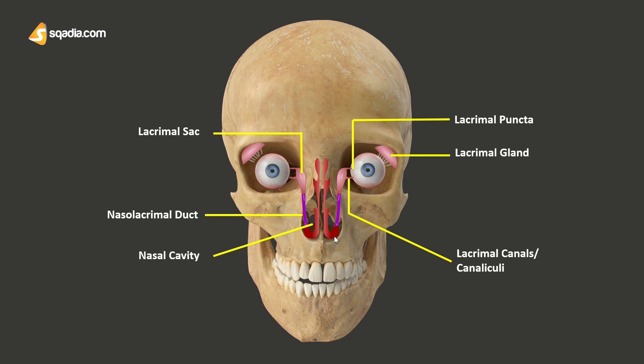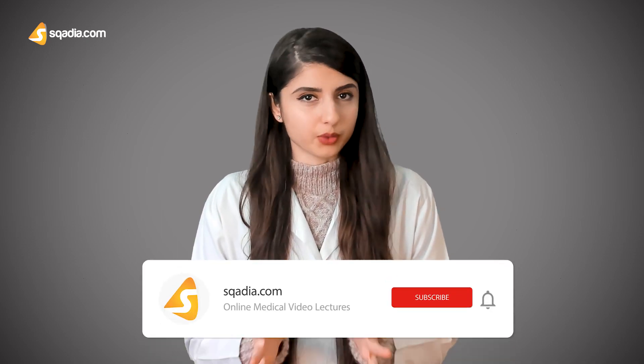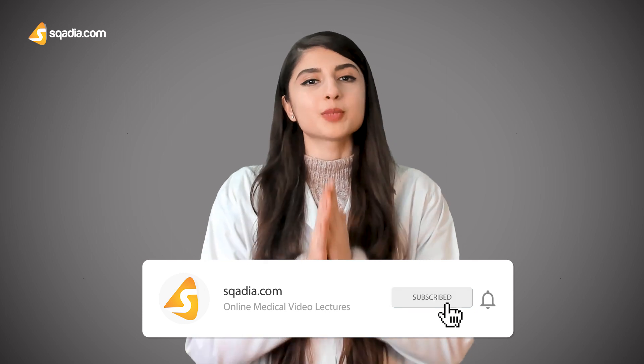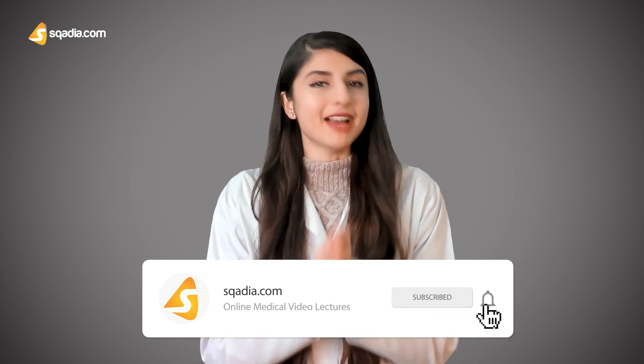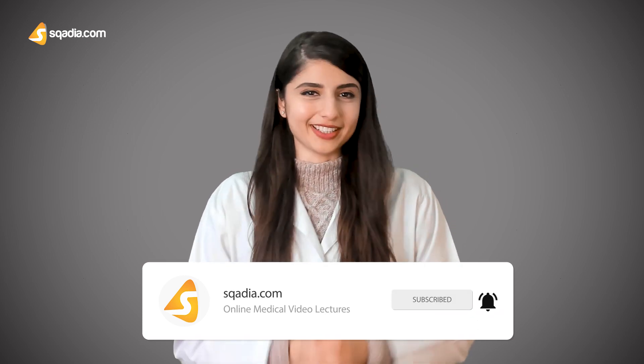It is also said to be located at the medial wall of the orbit. Before moving forward and discussing the articulations of the lacrimal bone, let's recall all the facial bones, since they're all correlated to each other, so it's very important to know them as well.